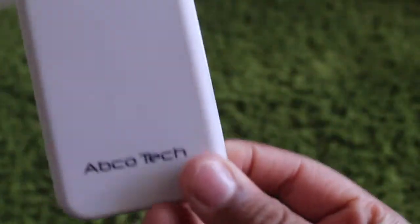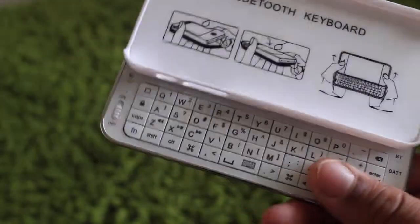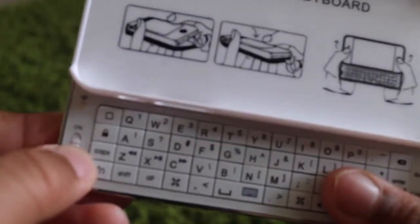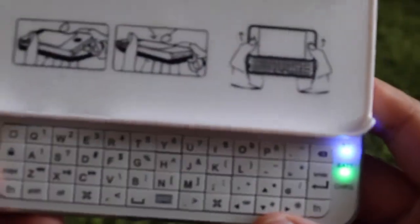And then I have this one. This is one of my absolute favorite ones. It's by Abco Tech and you put your phone in and then it slides out into a keyboard. And then the keyboard hooks up with Bluetooth. You just have to turn it on and you can actually type and it hooks up with Bluetooth. So it is pretty cool.